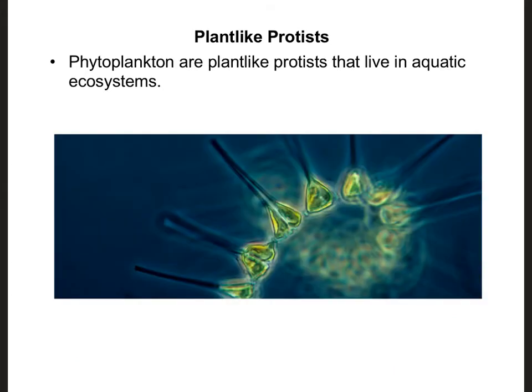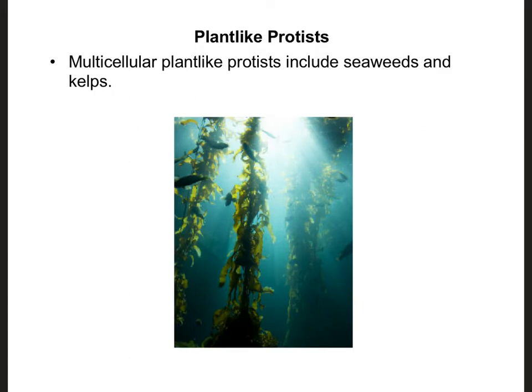The plant-like protists that live in aquatic ecosystems we refer to as phytoplankton, and zooplankton are our animal-like protists that live in aquatic ecosystems. These multicellular plant-like protists include things like seaweed and kelp. Because they don't have specialized tissues, we can't actually call them true plants — therefore, that is why they're considered to be a protist instead.